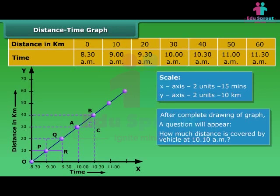Join all the points on the graph to get a linear distance time graph, which shows that the vehicle is moving at a constant speed. From this graph, we can calculate the distance covered by vehicle at a particular moment. We can calculate the time at a particular distance from the starting point. In the same way, we can calculate speed also.